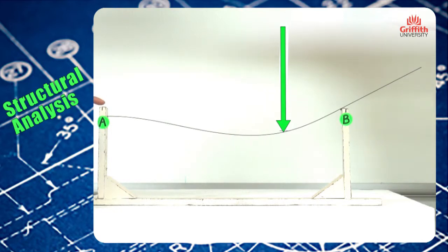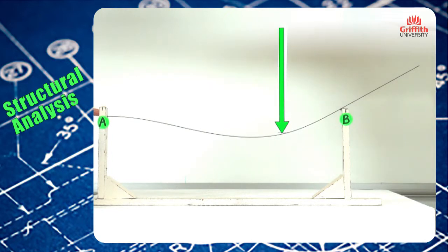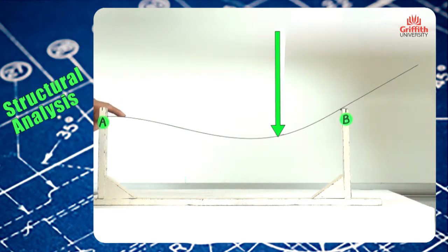So all the rotation and translations will be restrained at this point. We can see that the deformation of the beam close to point A is almost flat and then it comes down.